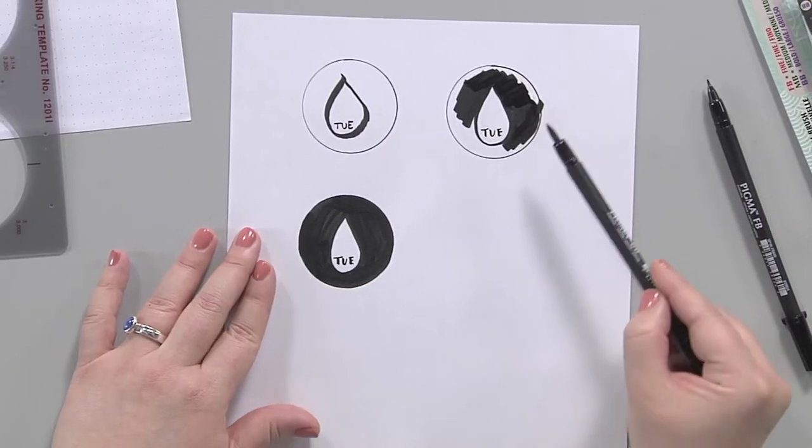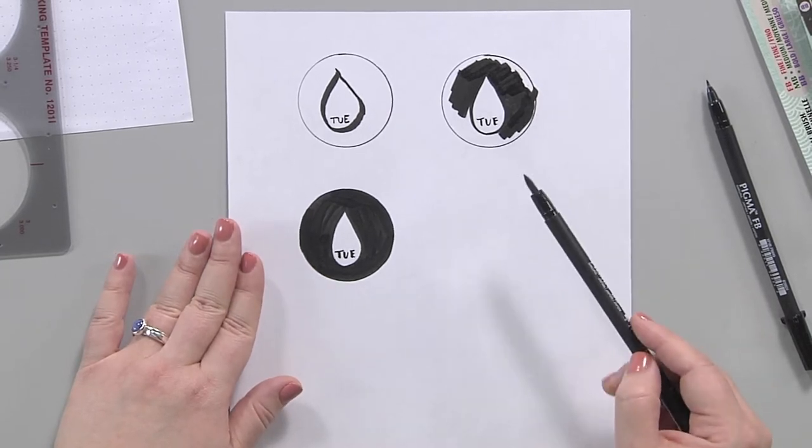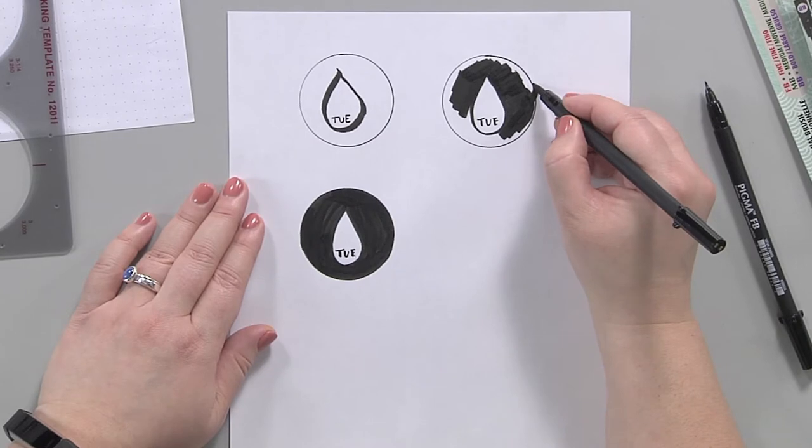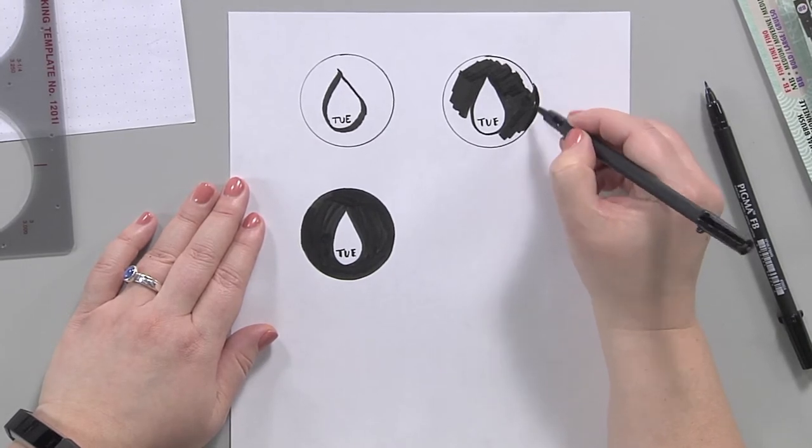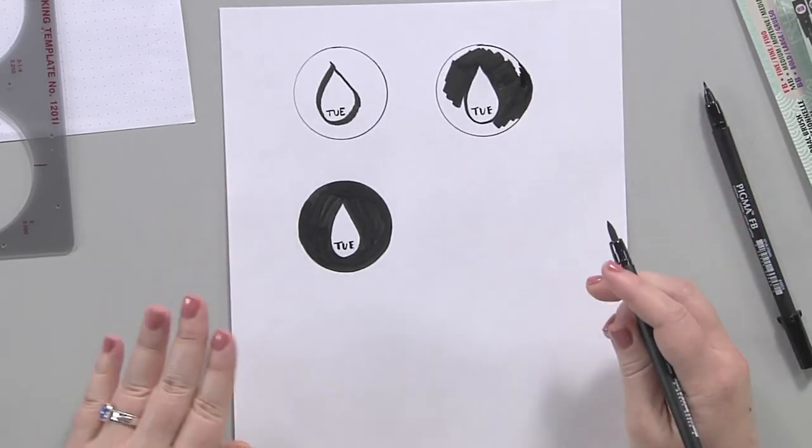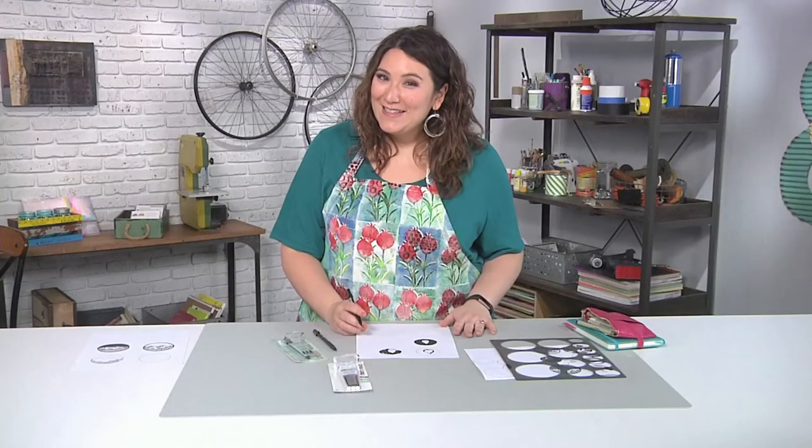Now if you're messy and you make a small thing where you go outside the line, don't worry. Because this is a brush tip, you can then use the very tip of it just to smooth out anything you did and no one will ever know that you went out of lines. But isn't life all about coloring outside the line sometime?